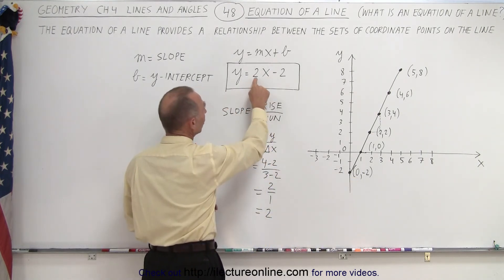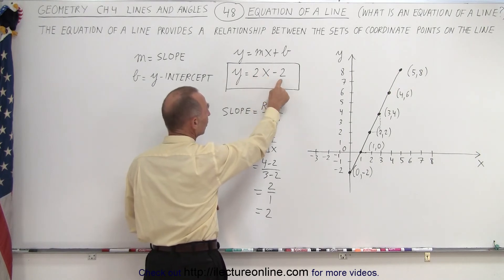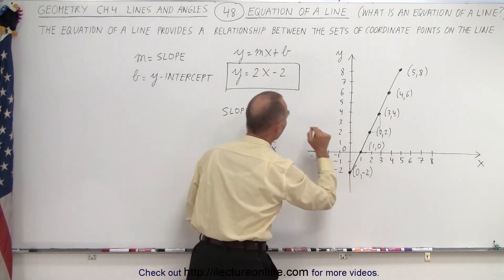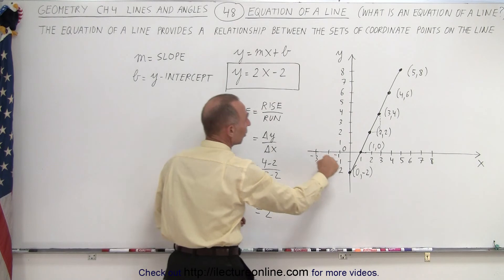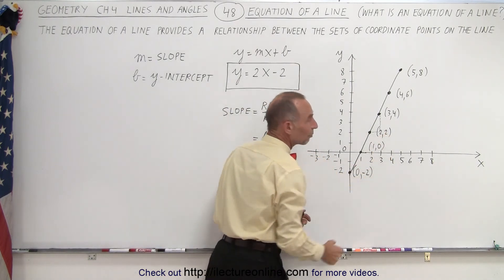If x is 1, 2 times 1 is 2. Minus 2 gives me 0. Then y equals 0. 1 and 0. If x is 2, 2 times 2 is 4. Minus 2 gives me 2 again. So if x is 2, I get a 2 and so forth.